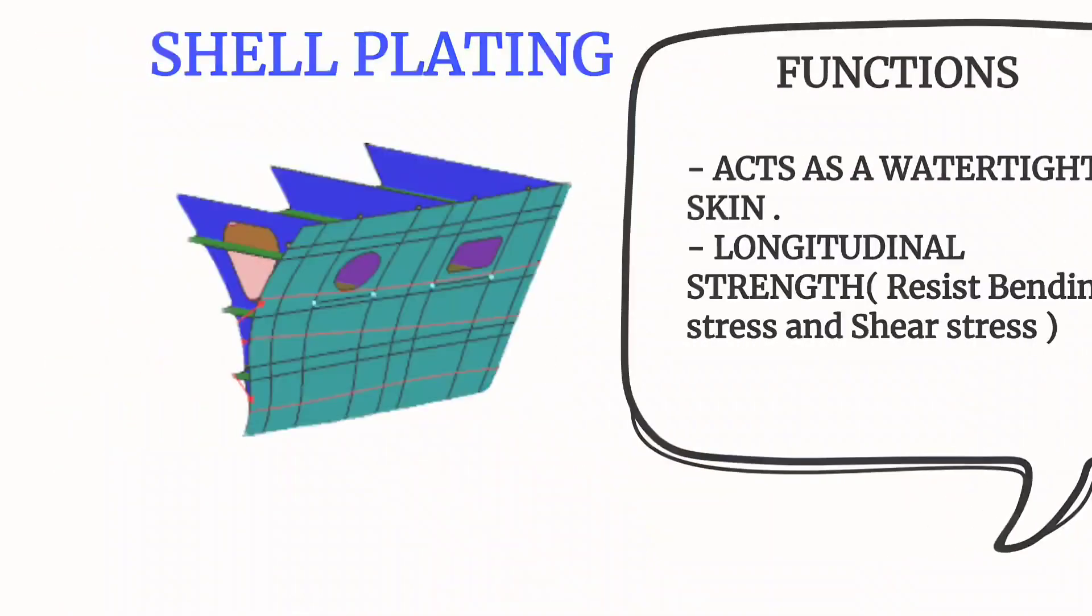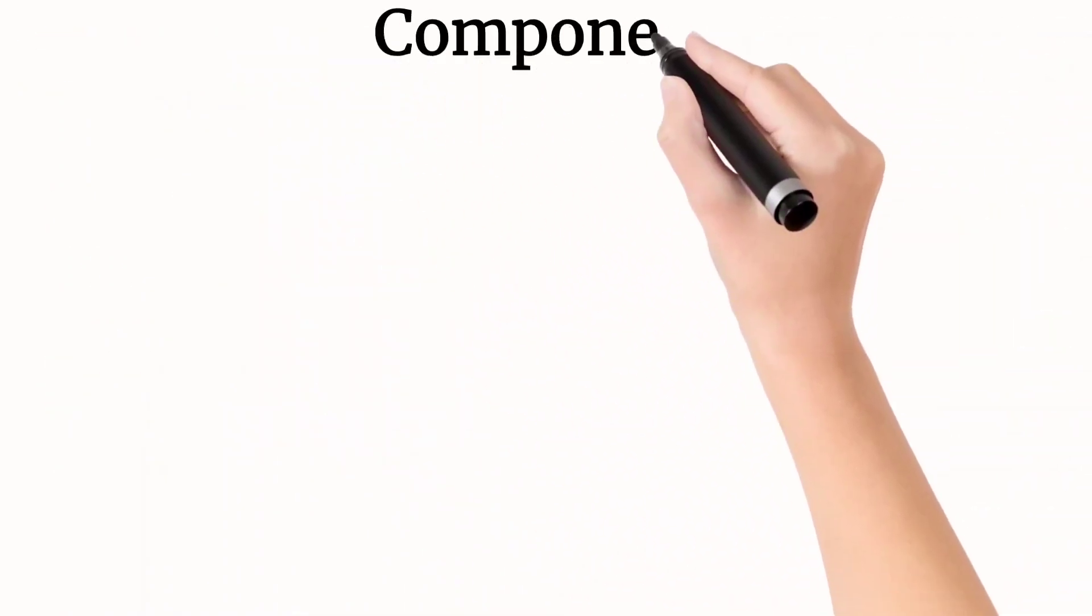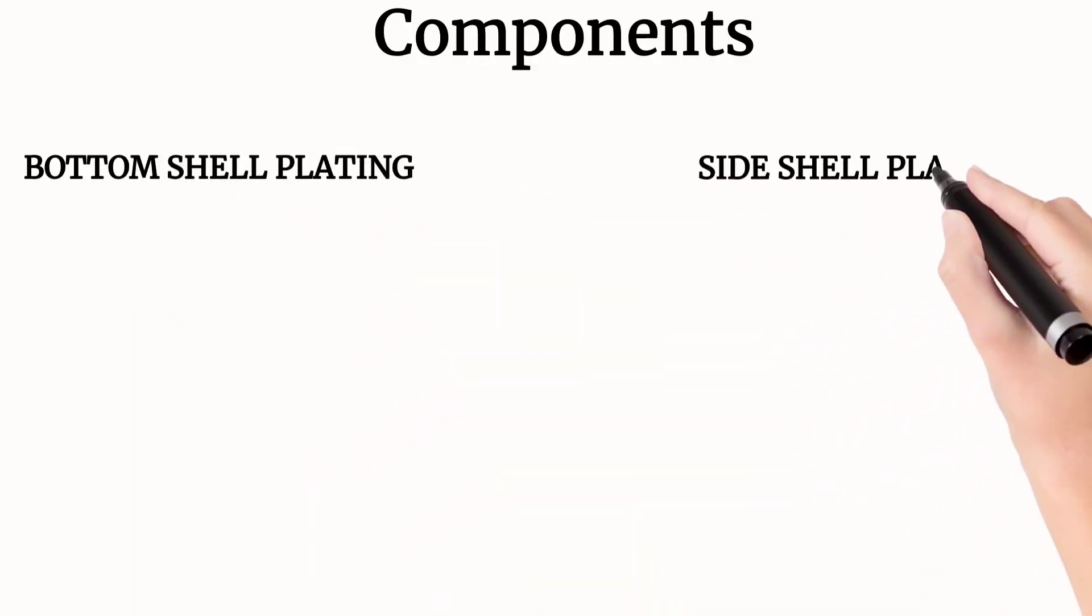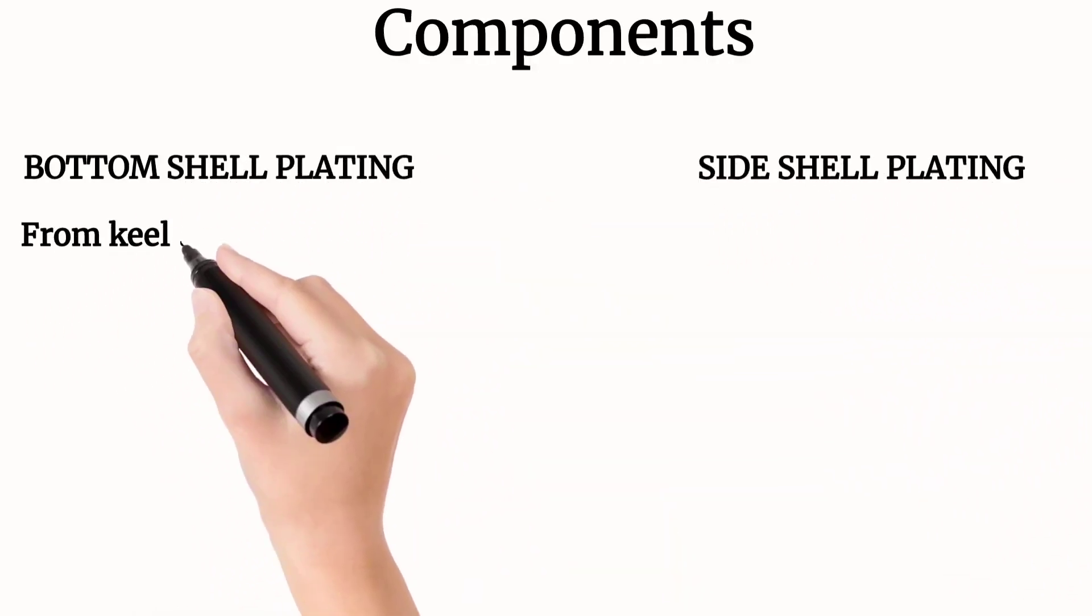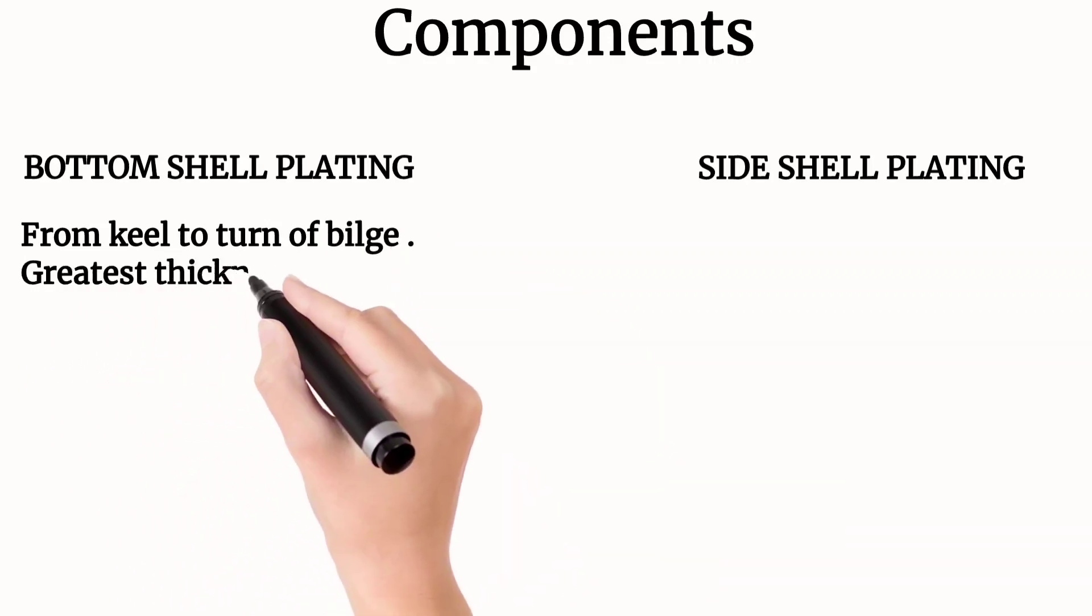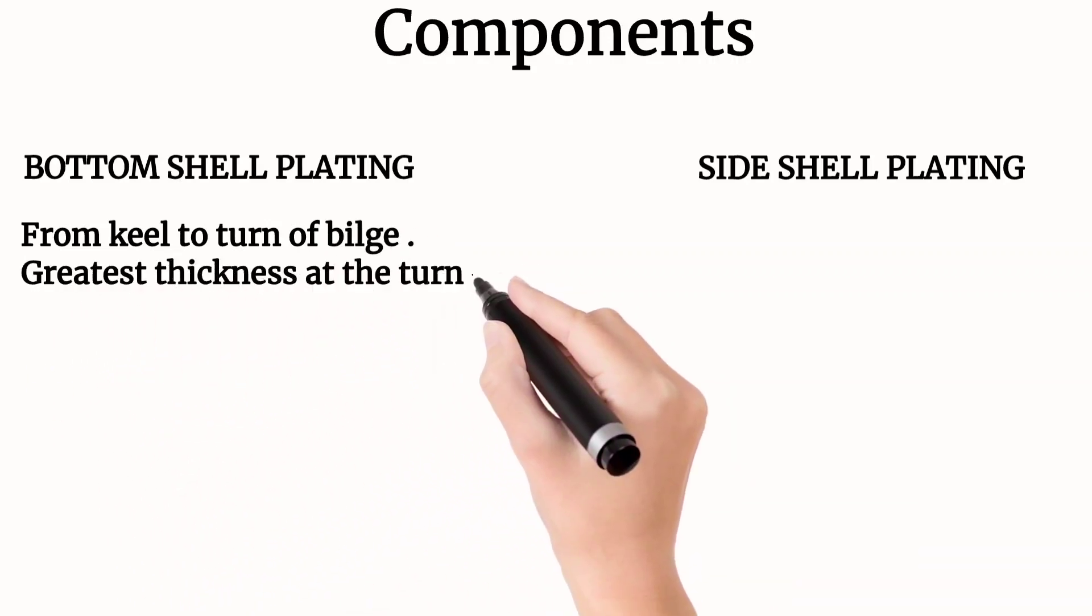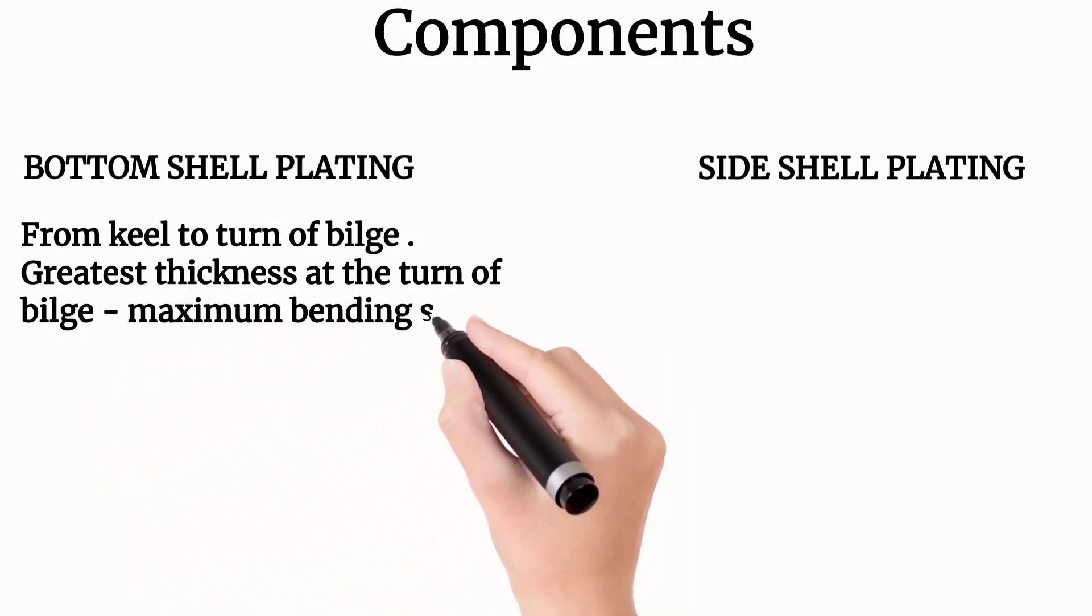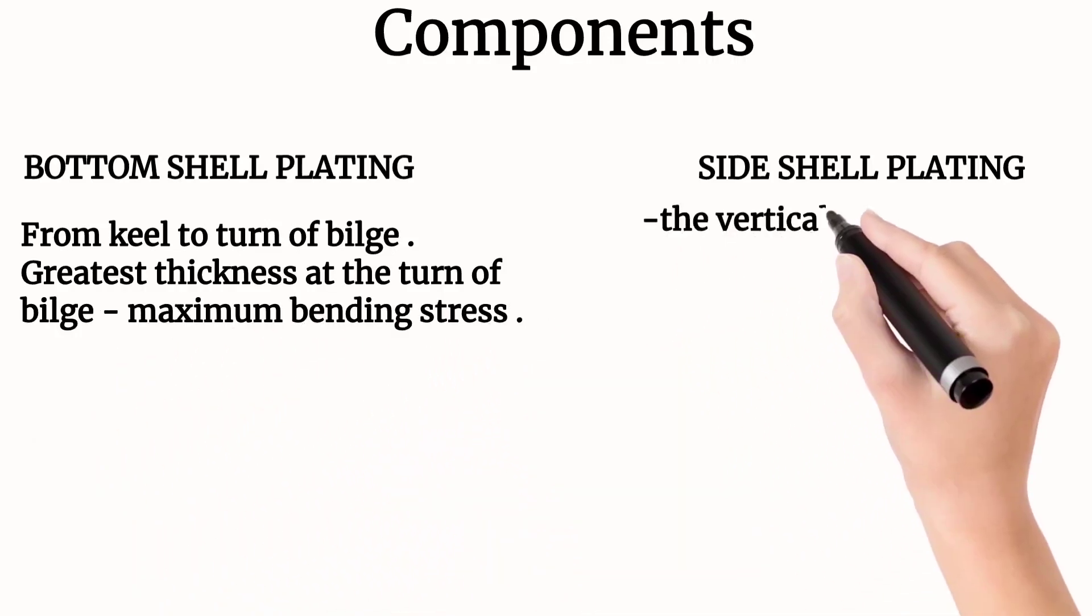This is a picture of shell plating. Now let's see the components of shell plating: the first is the bottom shell plating and second is the side shell plating. Bottom shell plating is from keel to the turn of the bilge, and the greatest thickness is at the turn of the bilge because the maximum bending stress is there.